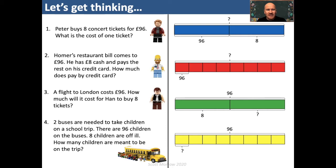Question one: Peter buys eight concert tickets for £96. What is the cost of one ticket? Question two: Homer's restaurant bill comes to £96. He has £8 cash and pays the rest on his credit card. How much does he pay by credit card? Question three: A flight to London costs £96. How much will it cost for Han to buy eight tickets? And question four: Two buses are needed to take children on a school trip. There are 96 children on the buses. Eight children are off ill. How many children are meant to be on the trip? Pause the video for a few minutes, discuss these with a partner and then share your thoughts with the rest of the class.